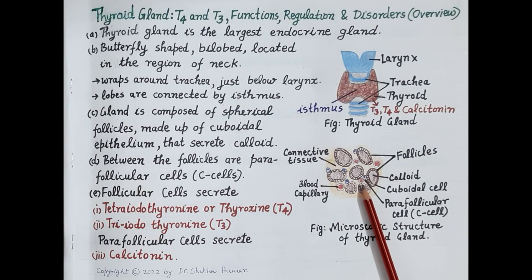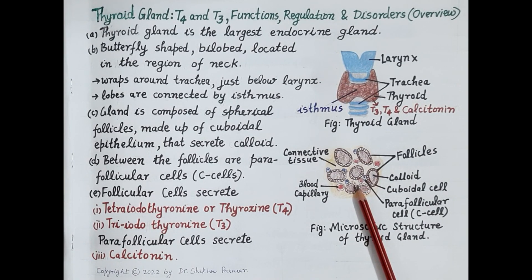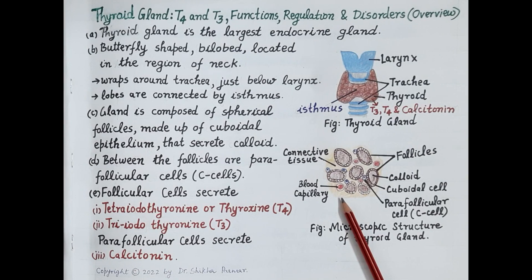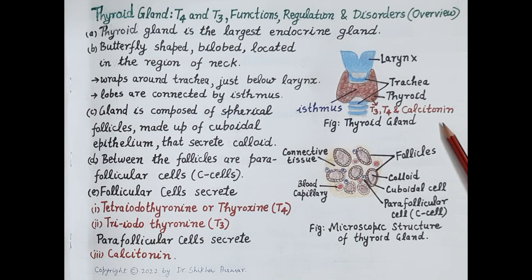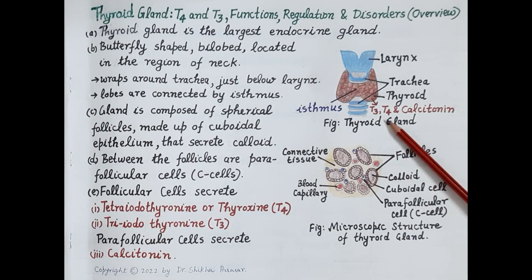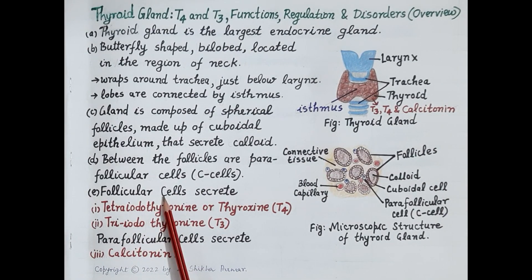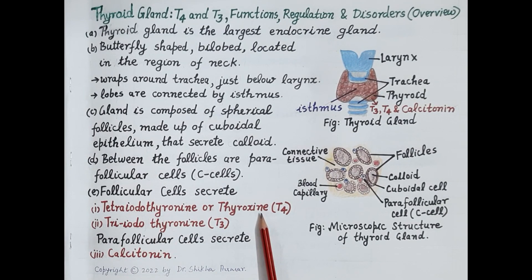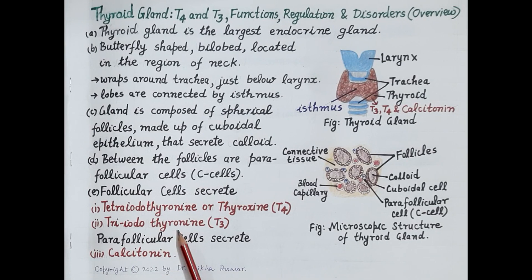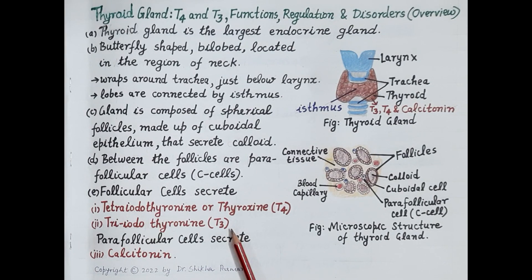Between the follicles are parafollicular C cells, which secrete another hormone called calcitonin. The thyroid gland is highly vascular and richly supplied with blood vessels. So the thyroid gland produces three hormones: T3, T4, and calcitonin. Follicular cells secrete tetraiodothyronine (thyroxine/T4), which contains four iodine atoms, and triiodothyronine (T3), which contains three iodine atoms. T4 and T3 are collectively termed thyroid hormone.